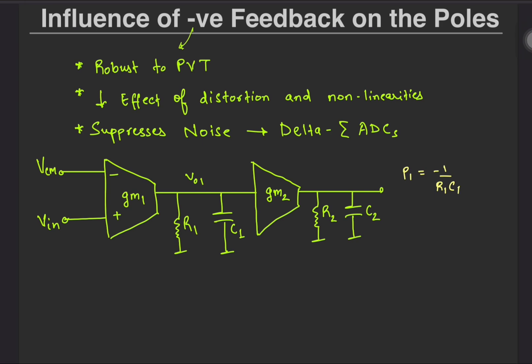It is trivial to say that the poles would lie at omega equals to minus 1 by R1C1 and minus 1 by R2C2.